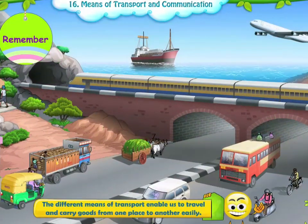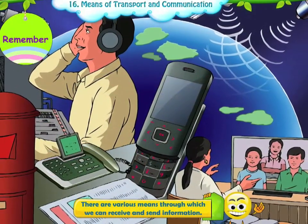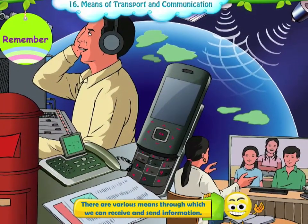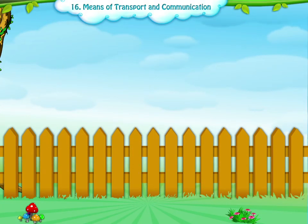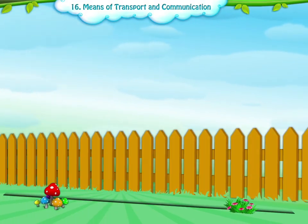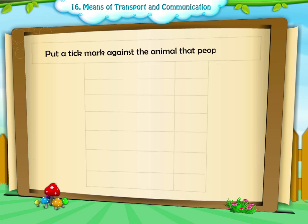Remember, the different means of transport enable us to travel and carry goods from one place to another easily. There are various means through which we can receive and send information. Now let us do some activities. The first one: put a tick mark against the animal that people ride.